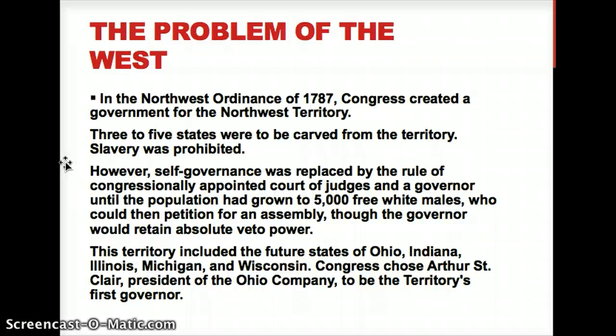By 1787, the Treaty of Paris had been signed, and so they could start addressing the question of slavery. But instead of self-governance, the Articles of Confederation would appoint a court of judges and a governor to oversee the area until the population had grown to 5,000 free white males. That doesn't mean they didn't still smuggle slaves in — and they didn't care about women, or honestly, poor men when it came to counting either.